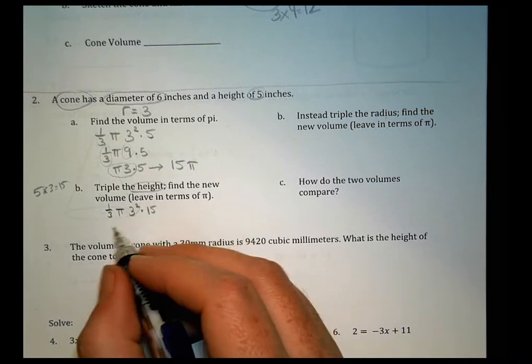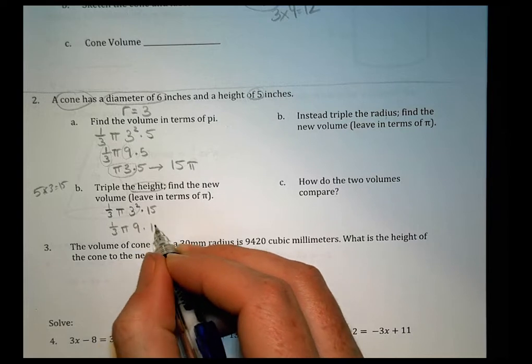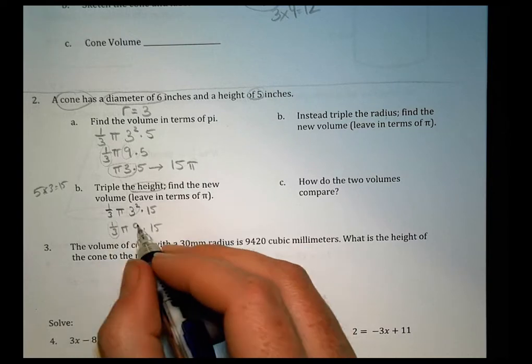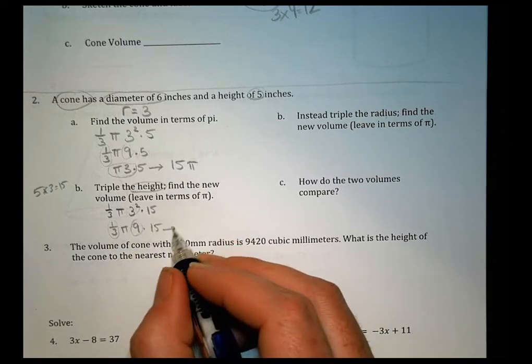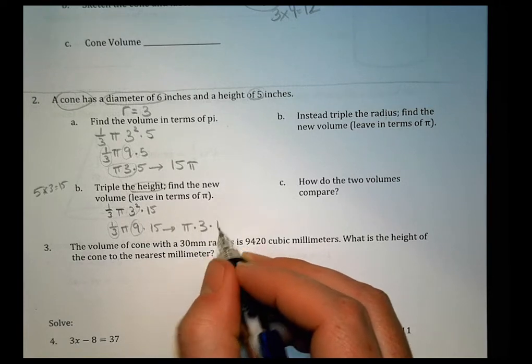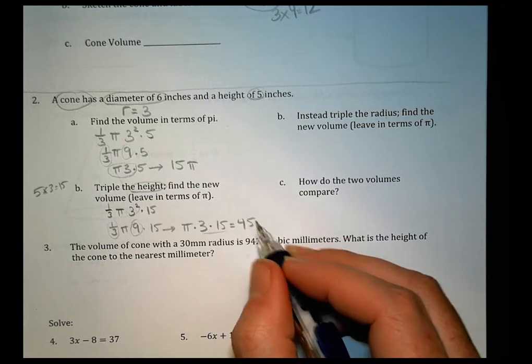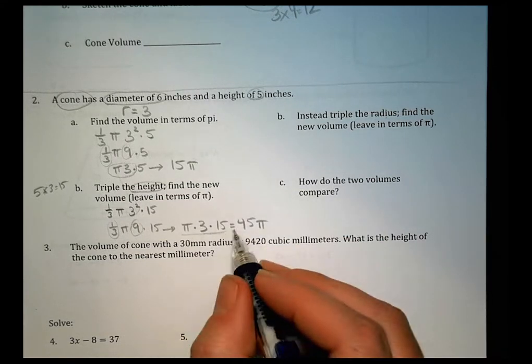So this becomes 9. So we still have 1/3 pi times 9 times 15. We can reduce this to a 3. So we have pi times 3 times 15. And 3 times 15 is 45. And we keep pi right there where it is.